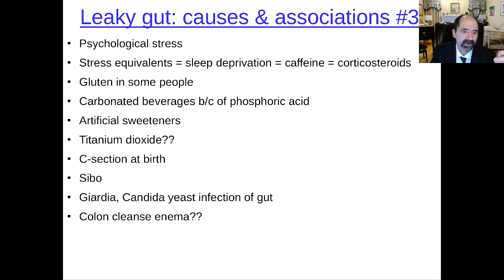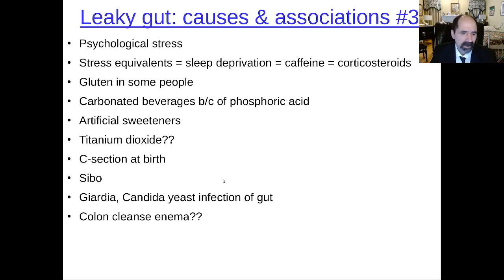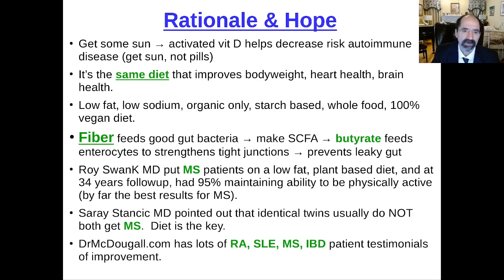Having a C-section at birth means the child doesn't get as much flora. Normally, the baby swallows the vaginal flora as it's being born, and that initiates its gut. SIBO and some infections, though relatively uncommon, are also factors. Colon cleanse enemas — be careful; make sure you're eating your plant foods, because plant foods restore your gut pretty fast.